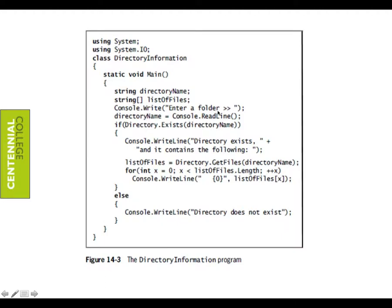Here's another thing we can do: we can check to see if a directory exists — a folder. We can say 'enter a folder,' get my directory name, and then do a listing of files. Using System.IO again, instead of asking for a file name, we can ask for a folder name. We check: does the folder exist? And if it exists, give me the directory structure.